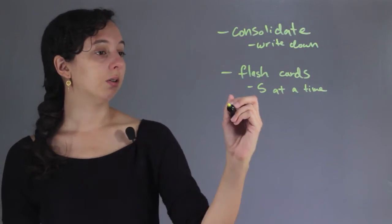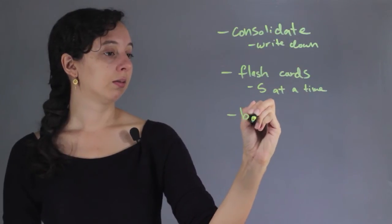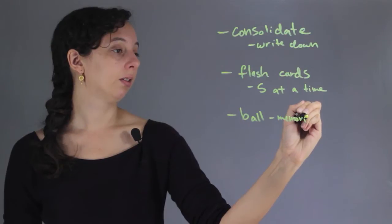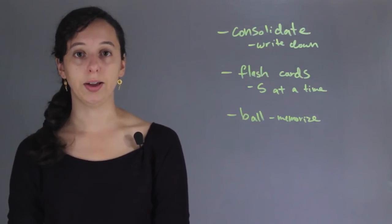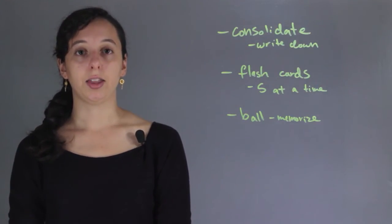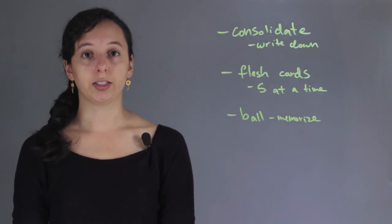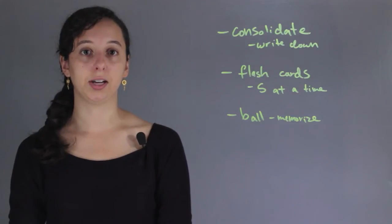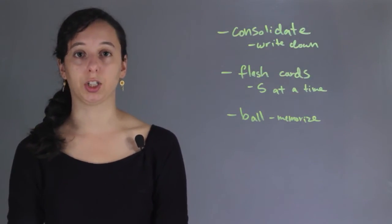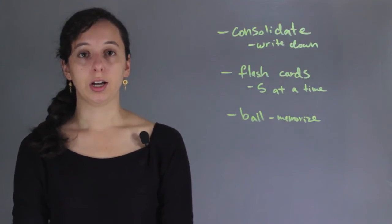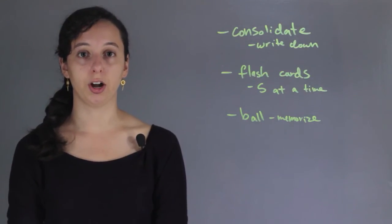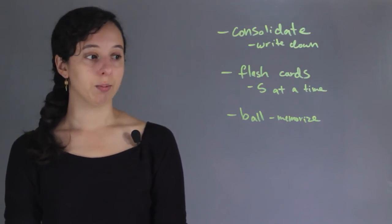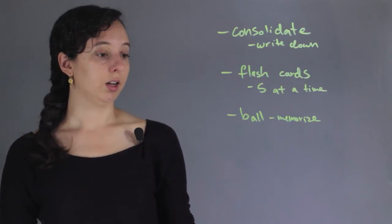If you have a partner, one thing you can do is the ball memorize game. Essentially, how it works is — let's say we were trying to memorize elements. I would throw the ball to my partner, and as soon as you catch it, you have to say the name of an element. Then you throw it back, and when you catch it again, you have to say a different element. You can go back and forth, and this is a good way to have active learning. If you've been sitting at your desk and you're really sleepy, throwing a ball back and forth can really work. If you're by yourself, you can just throw it up in the air and try to say a new element every time you catch it. This is a good way to get some blood pumping.